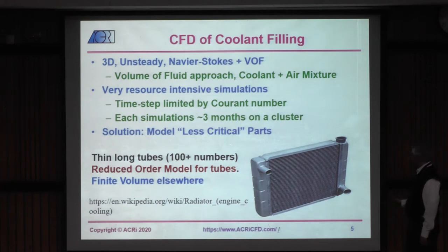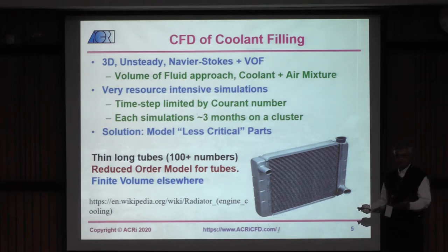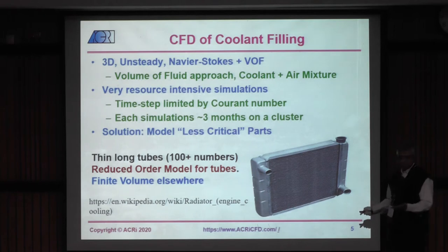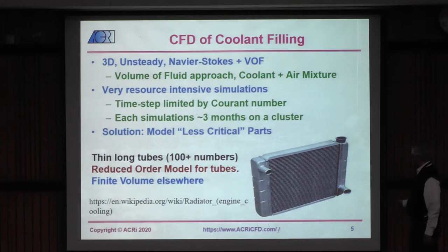I had to look for something that at least models some of the less critical parts. My initial idea was about the thin long tubes in the radiator part. By looking at the experiment — some of these were transparent — I could see all the tubes were completely filled with coolant; there was no air trapped there. The solution is likely fully developed in these thin long tubes — pretty much one-dimensional with fully developed flow once full. So I wanted to try a reduced order model for the tubes and mix it with finite volumes in the rest of the flow field.